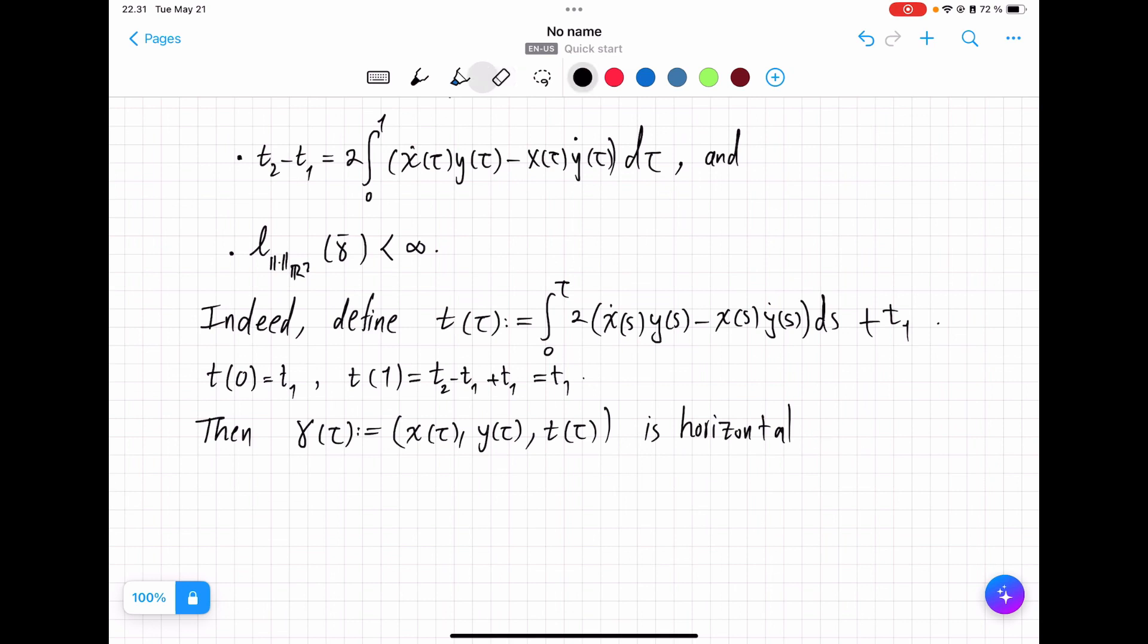just by properties of absolutely continuous functions and the fundamental theorem of calculus. And then, the last condition, so gamma of 0 will be X1, Y1, T1 by the assumptions on gamma bar and this condition that we just checked here.